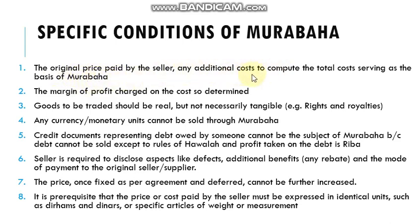That starting point is the cost of the good or object. Number two: the margin of profit charged on the cost so determined will be defined in the deal and explained to the buyer — meaning what is the total cost of the product and what profit the seller is charging on that product.